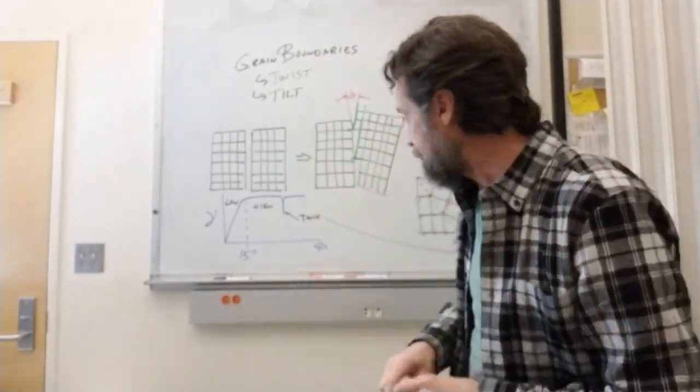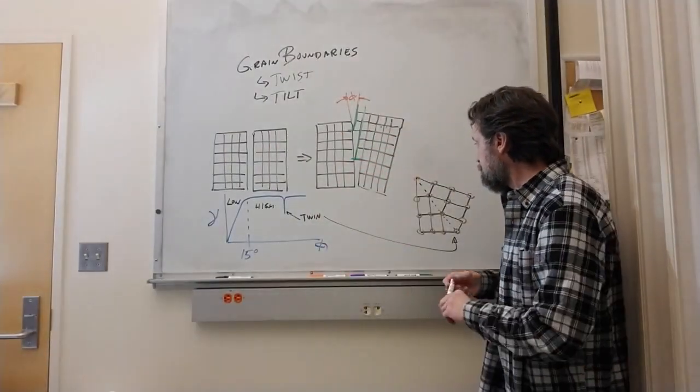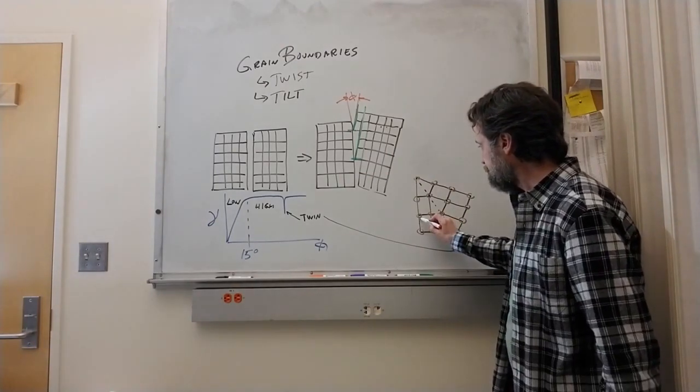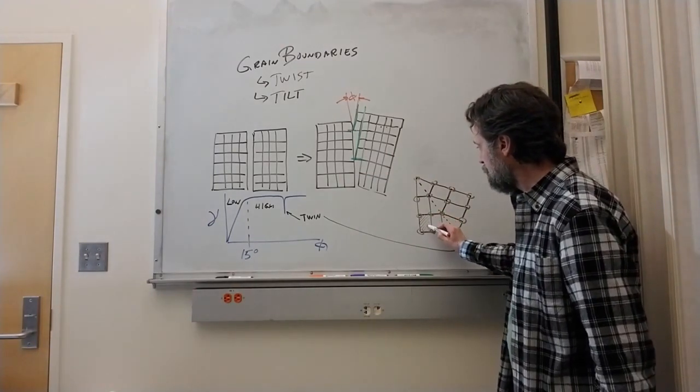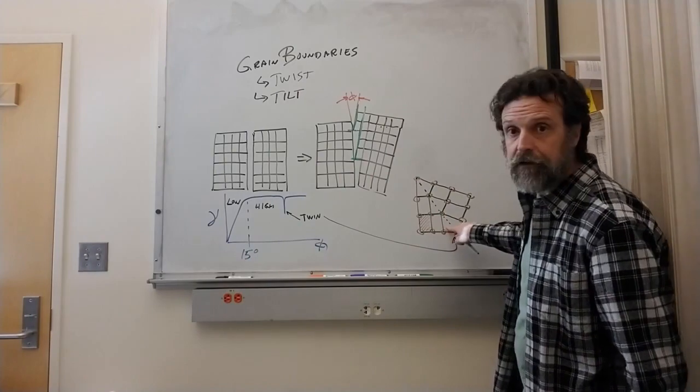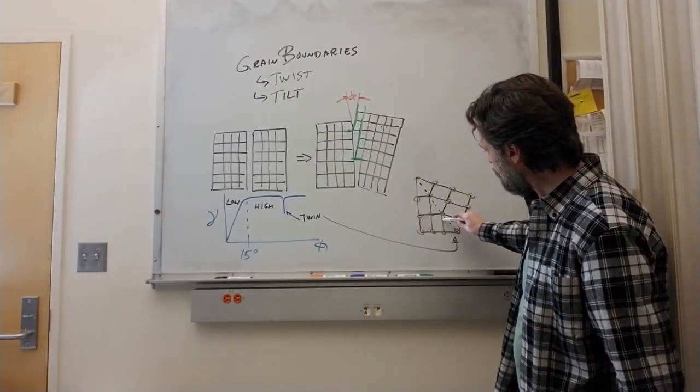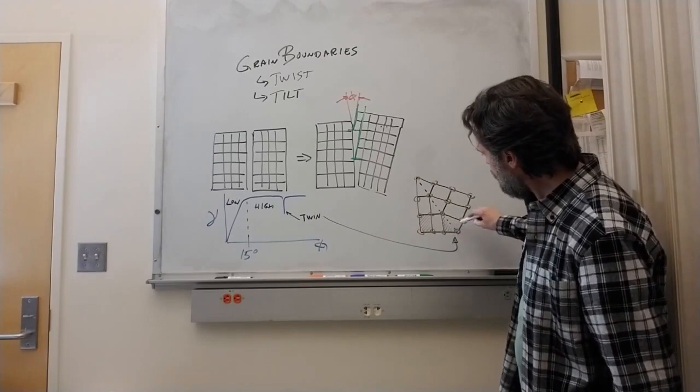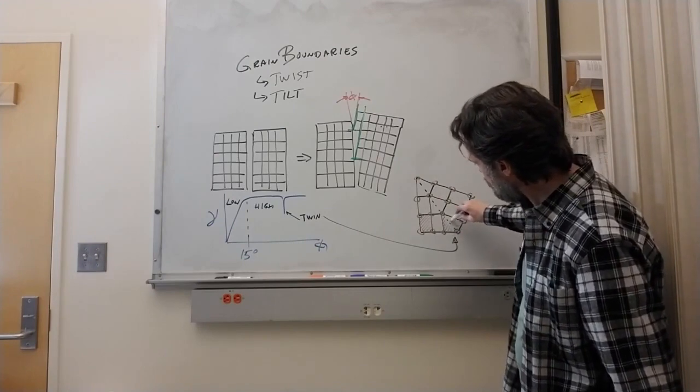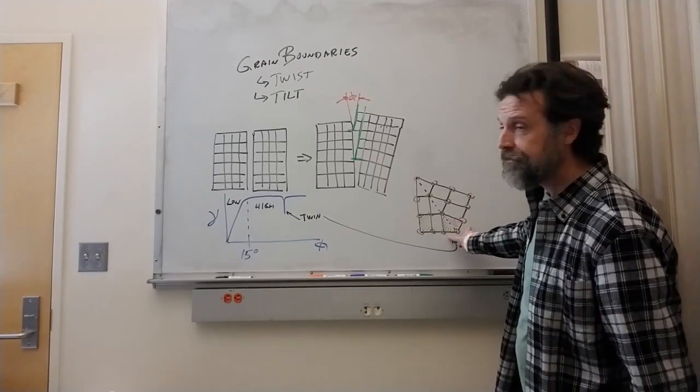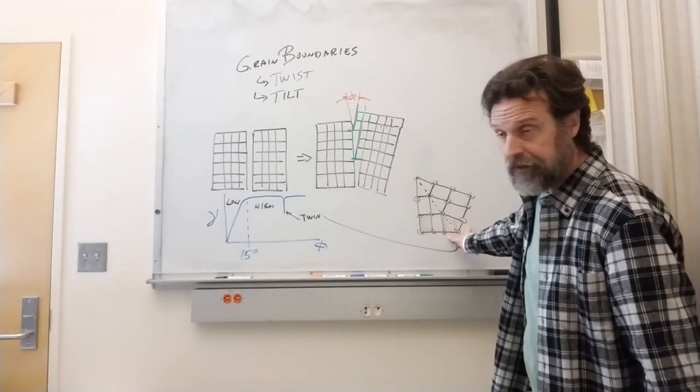If our unit cell is this rectangle, then at the twin boundary we have half of a rectangle here and another half of a rectangle here, and this constitutes the twin boundary.